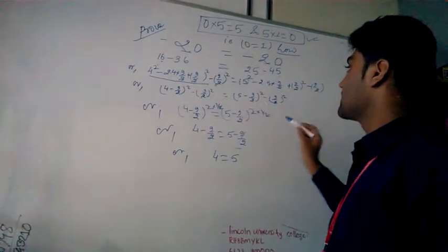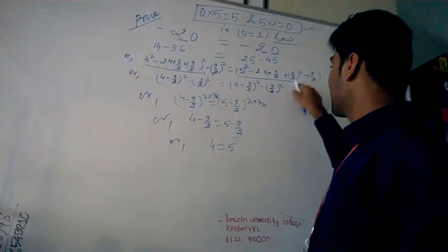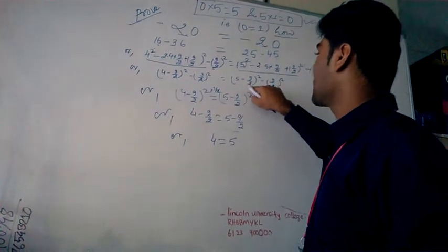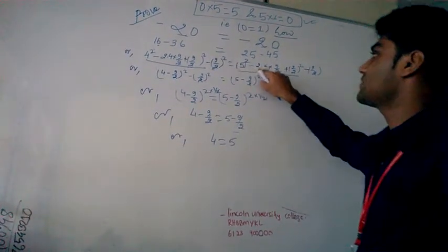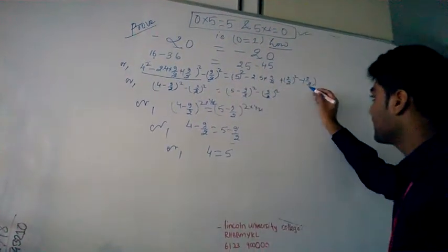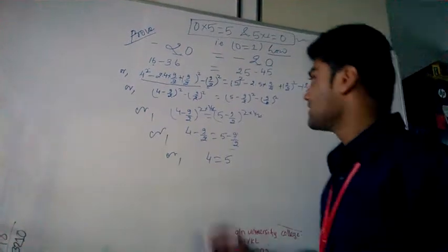Come to right hand side. Again, this A minus B, A minus B whole square, means A square minus 2AB plus B square. It's all right. And I write this as it is.